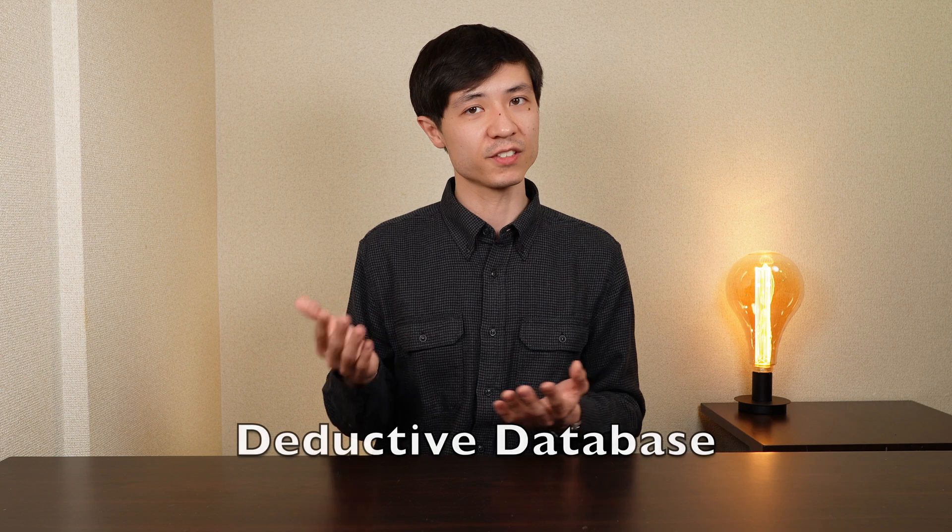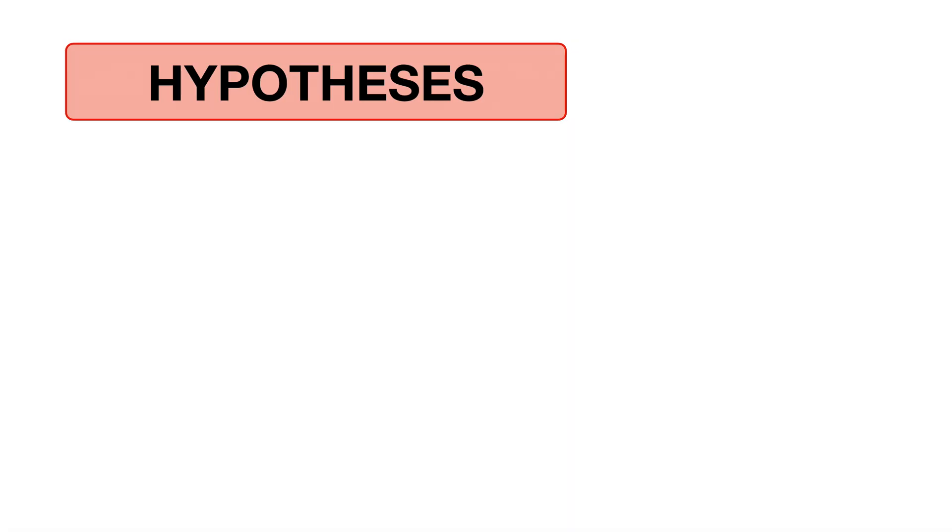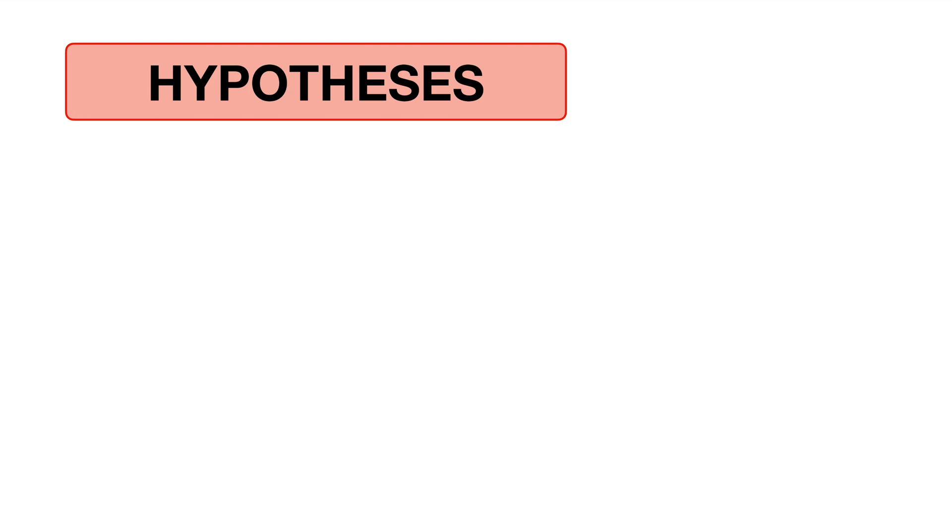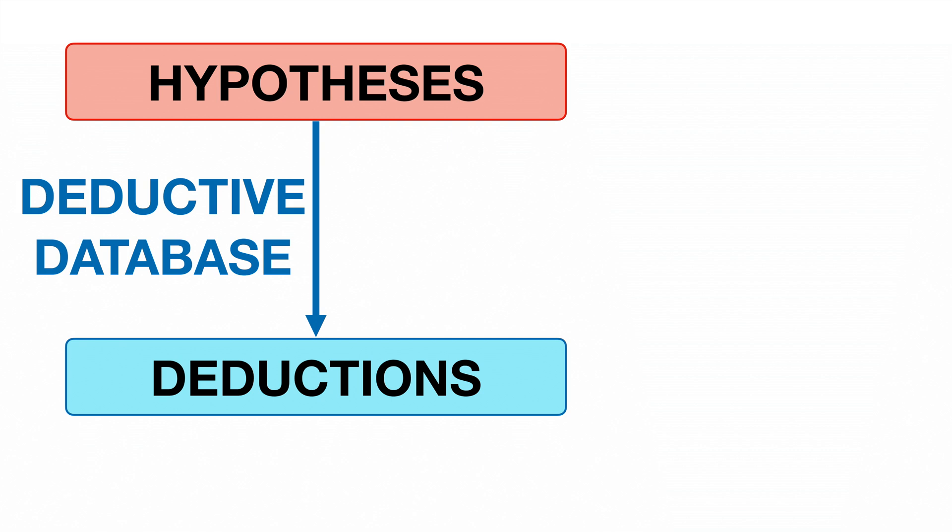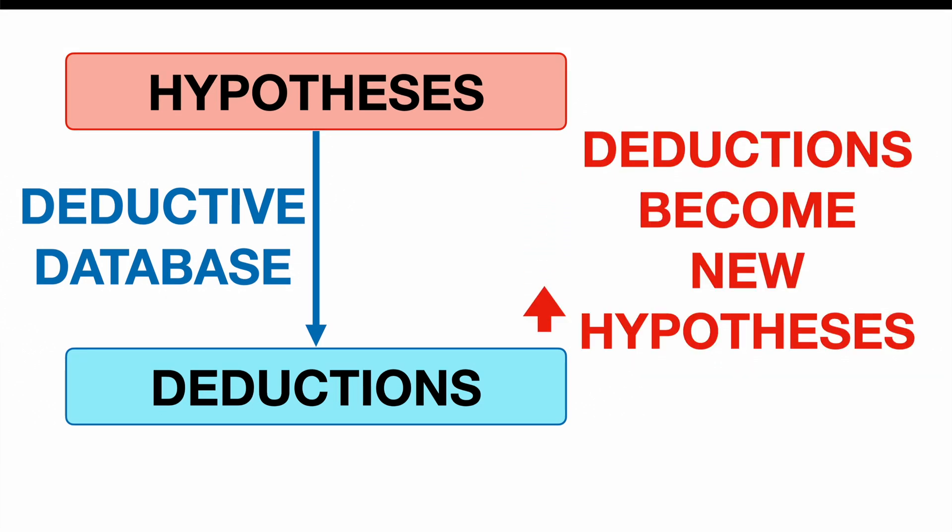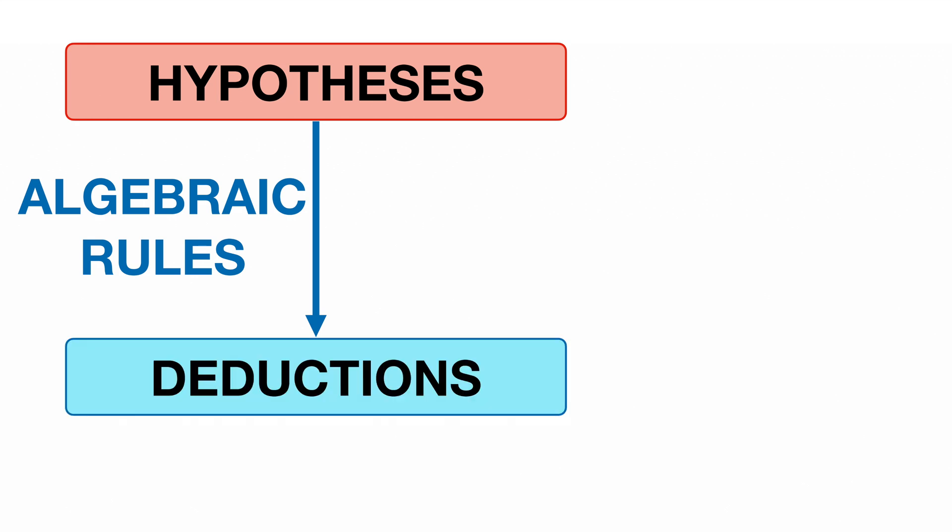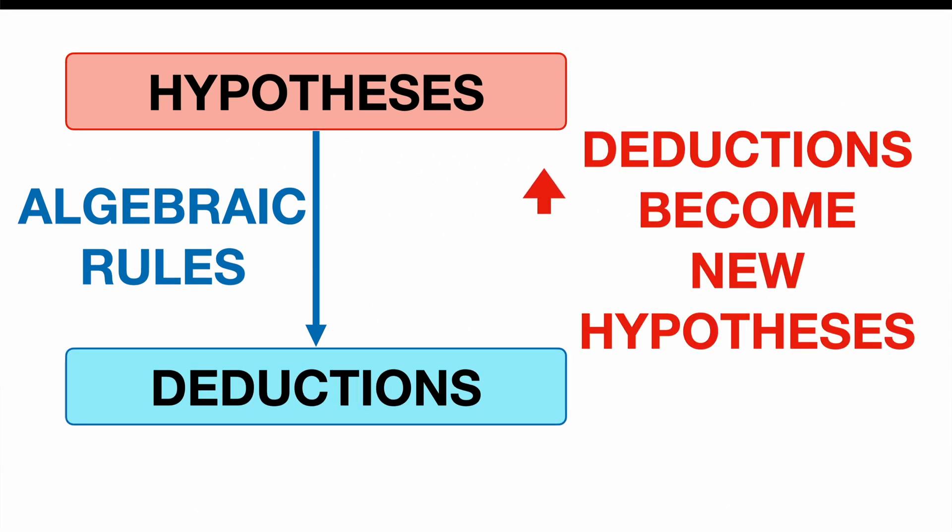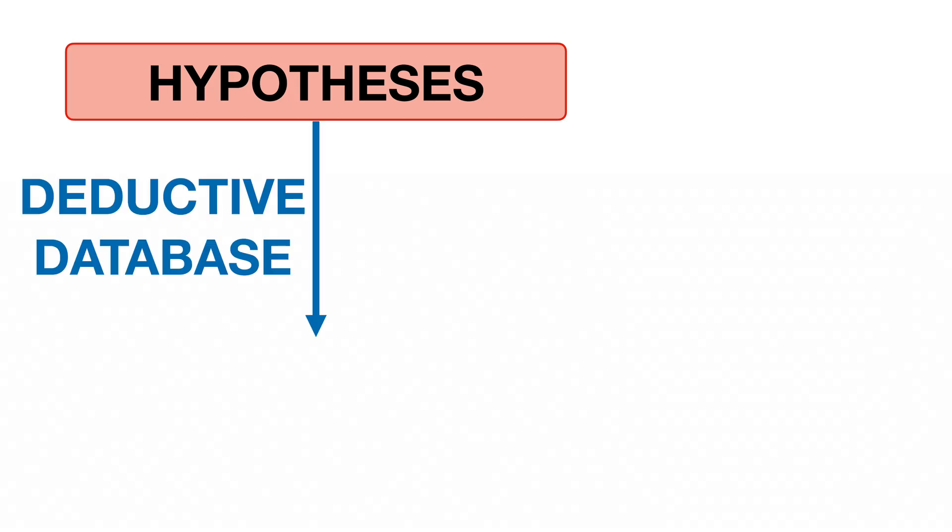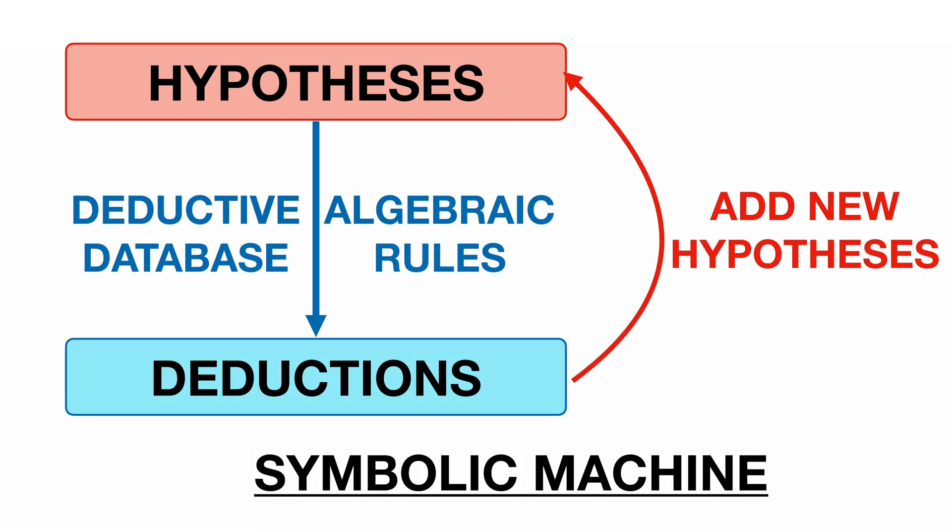We now have two symbolic learning methods to make deductions from a set of hypotheses: deductive database and algebraic rules. The symbolic machine in this paper first applies deductive database to the set of hypotheses and makes some deductions. It then adds those deductions to the set of hypotheses and then applies algebraic rules and makes deductions. It next adds them to the set of hypotheses and applies deductive database and so on until it does not come up with any more deductions. The symbolic learning procedure is at the heart of AlphaGeometry.